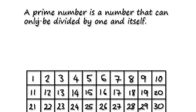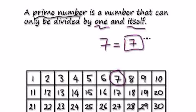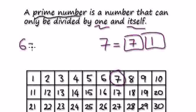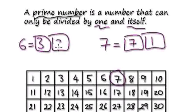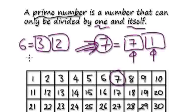In the previous video, I explained that a prime number is a number that can only be divided by 1 and itself. So for example, if you look at 7, the only way to break this 7 down is to do it as 7 times 1. Because 7 — the only way to break up a 7 is to use 1 and itself. So this here is a prime number. A 7 is a prime number.